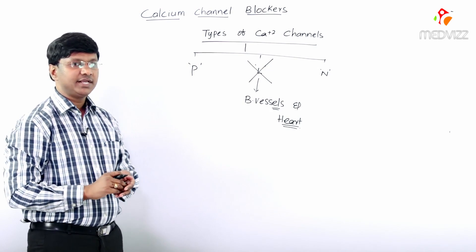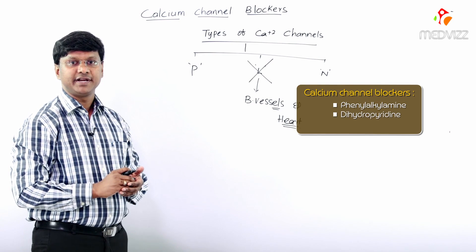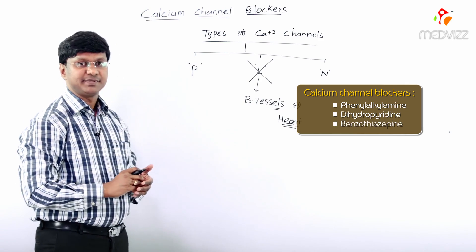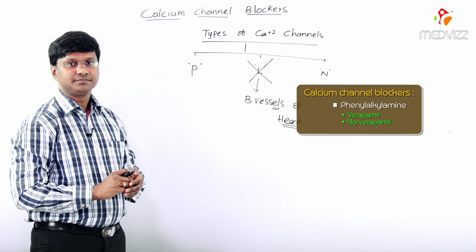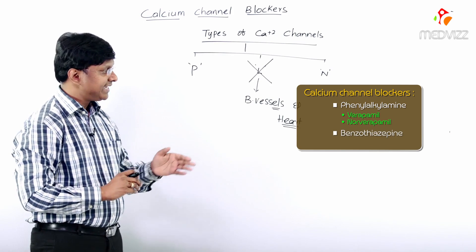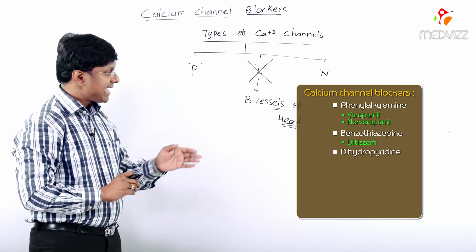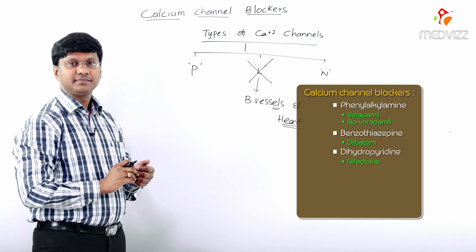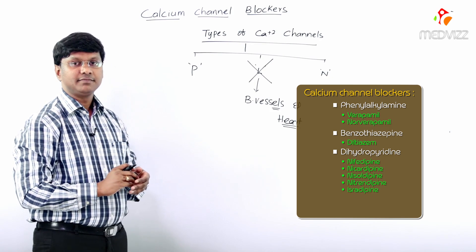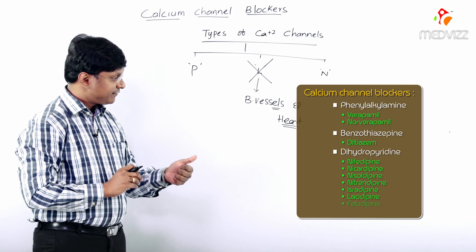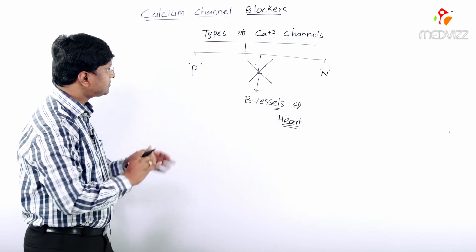There are three groups of calcium channel blockers. The first group is phenylalkylamines, with examples verapamil and norverapamil. The second group is benzothiazepines, with the example diltiazem. The third group is dihydropyridines, with examples including nifedipine, nicardipine, nisoldipine, nitrendipine, isradipine, lacidipine, felodipine, and amlodipine.